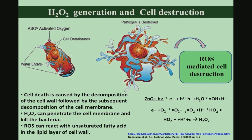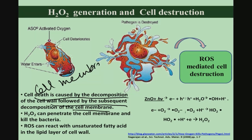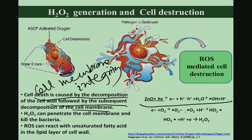The role zinc oxide plays in causing antibacterial properties includes H2O2 formation. Cell death is caused by decomposition of the cell wall followed by decomposition of the cell membrane. Cell membrane integrity is disturbed by zinc oxide addition. The potential reaction produces H2O2, which is one of the reactive oxygen species (ROS) that can penetrate the cell membrane and kill bacteria.